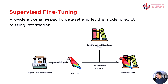Supervised fine-tuning: use labeled data with specific input-output pairs. For example, if the input is 'how do I find a broken bone?', the output might be 'X-ray'. This helps the model learn precise mappings between questions and answers.